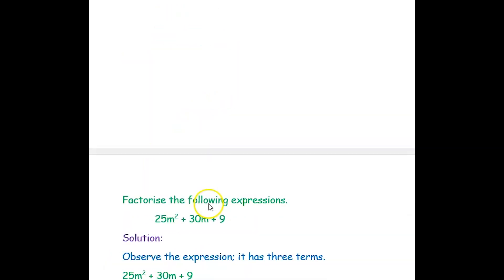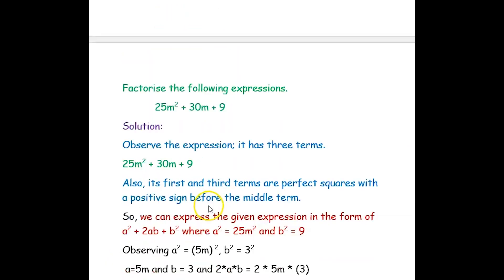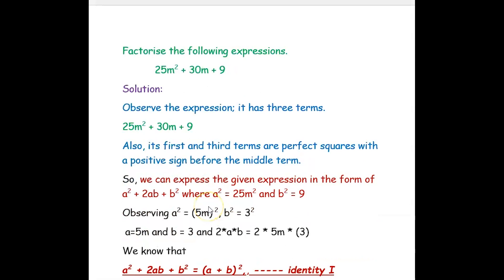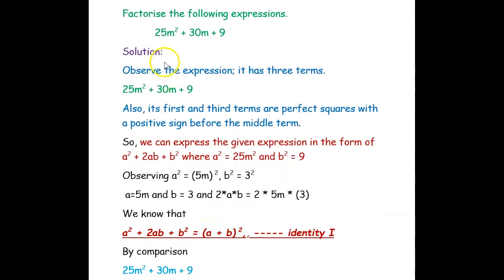Our first question is: factorize the following expression. The first expression is 25m squared plus 30m plus 9.